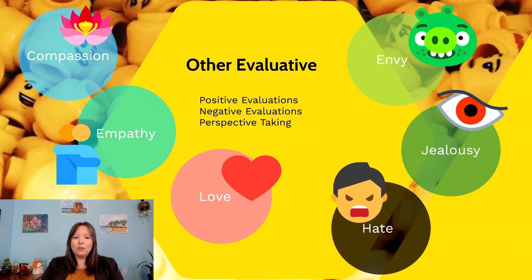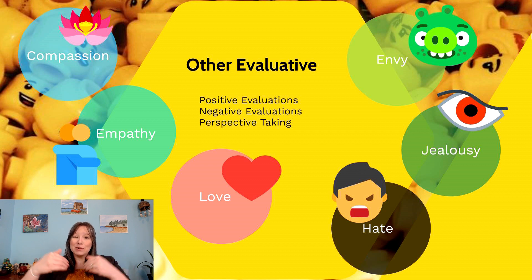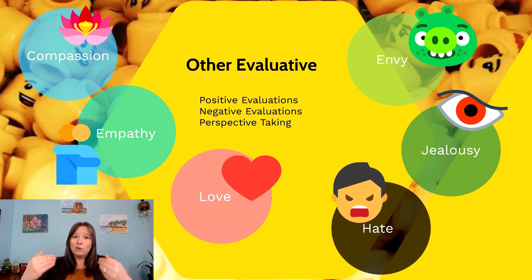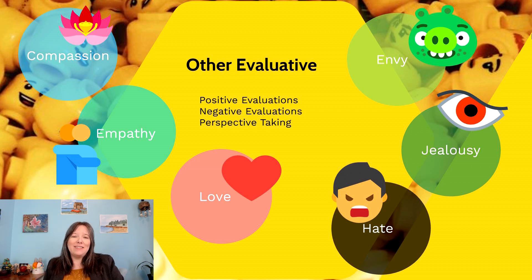When we're judging others, we can judge each other in positive or negative ways. This requires a certain level of perspective-taking — we have to think about what we feel about them. Some of these emotions require us to take the perspective of other people, so they tend to mature later because we have to understand who we are, who they are, and what they are experiencing. For instance, empathy is the idea that when somebody displays an emotion, you feel that same emotion.